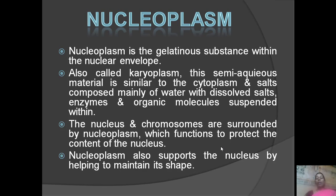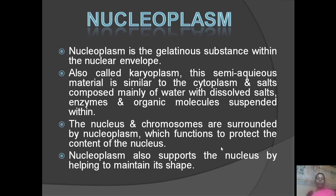Nucleoplasm is the gelatinous substance within the nuclear envelope. It is a semi-aqueous material similar to the cytoplasm, composed mainly of water with dissolved salts, enzymes, and organic molecules suspended within the nucleus.